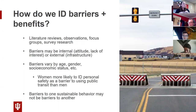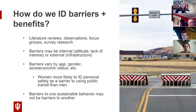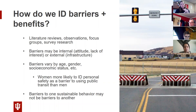Barriers can be internal or external, and you need to understand both. An internal barrier may be somebody's attitude or preconceived notion. Around recycling, for example, we often hear, 'it's all going to end up in the landfill anyway' — that's an internal barrier we have to address. External barriers might be something like infrastructure that isn't set up right, inadequate signage, or reminders not in the right spot. We have to separate internal and external barriers and understand both.